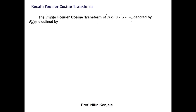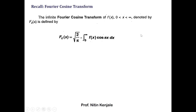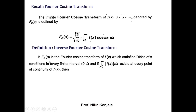First we recall the Fourier cosine transform definition. The infinite Fourier cosine transform of f(x), where x lies between zero to infinity, denoted by F_cs, is defined by root(2/π) into integration of f(x) cos(sx) dx over the limit zero to infinity.